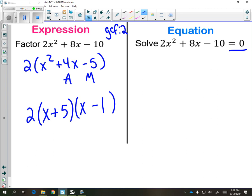And double check your work. 5 times negative 1 is negative 5. 5 plus negative 1 is your positive 4. And we're done. We fully factored it.